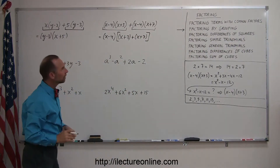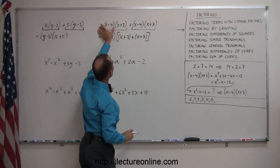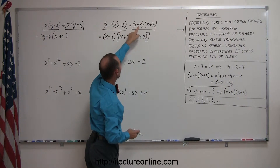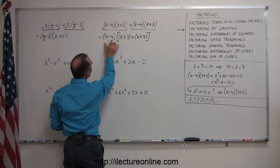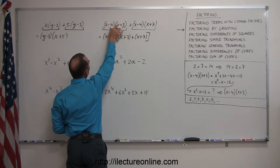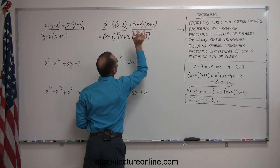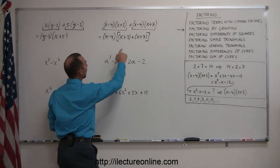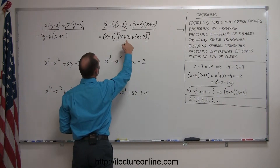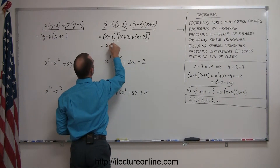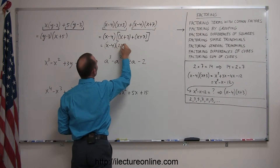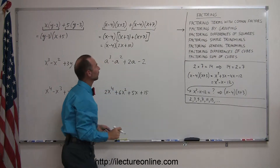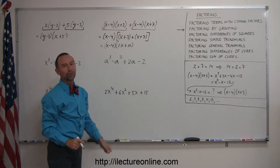All I did was factor out (x minus 4) from each term. If I multiply (x minus 4) times (x plus 3), I end up with the first term. If I multiply (x minus 4) times (x plus 7), I end up with the second. What's inside the brackets, I simply add: x plus x becomes 2x, and 3 plus 7 becomes 10. So I can write this as (x minus 4)(2x plus 10). That's the factored form of the original expression.